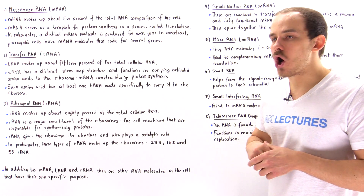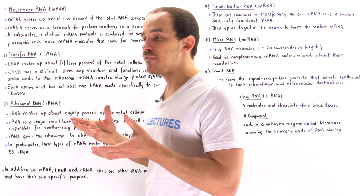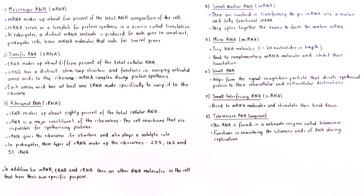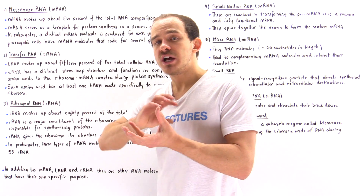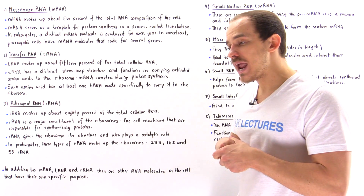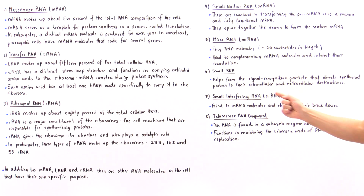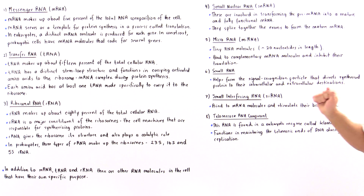What about small RNA? Small RNA is basically a constituent of a biological molecule found in the cytoplasm of our cells known as the signal recognition particle. The signal recognition particle is a complex that binds onto the synthesized polypeptide chain and then brings it to its final destination, be it inside the cell or outside the cell. So the small RNA molecule helps form the signal recognition particle that directs the synthesized protein to their intracellular or extracellular final destination.